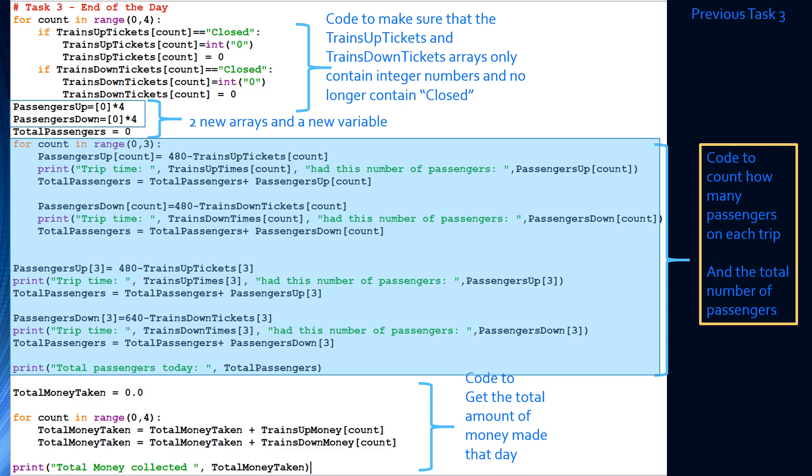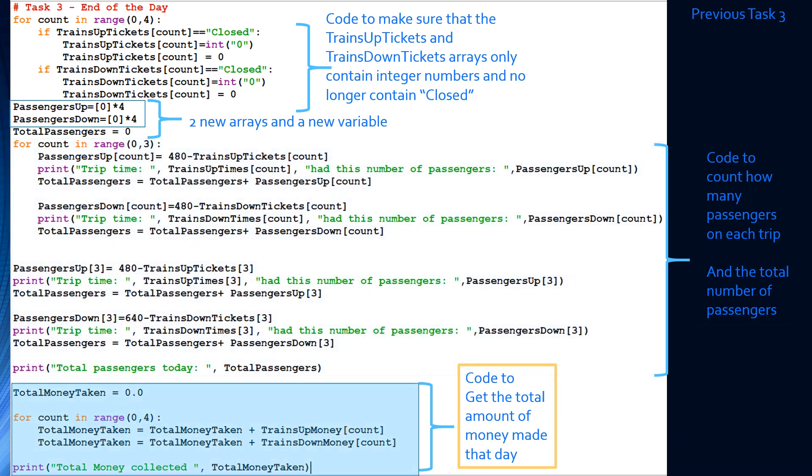These statements compare trains-up tickets: they calculate 480 minus trains_up_tickets, which gives passengers_up. The same is done for passengers_down. After that, we find the total money taken, and we also print the total number of passengers and the total money collected for the day.